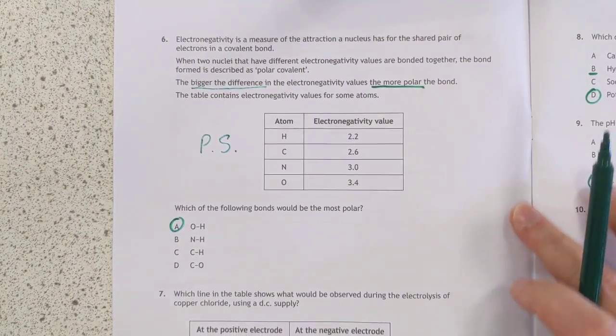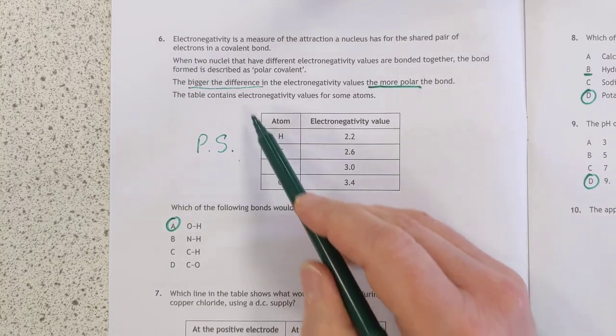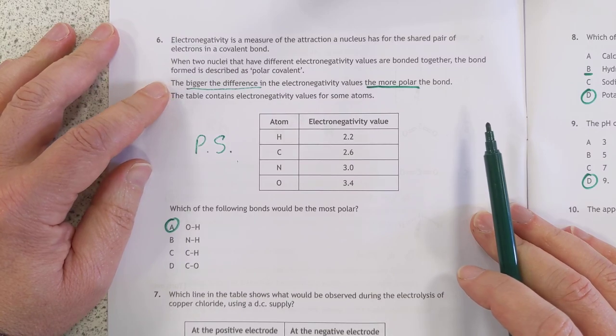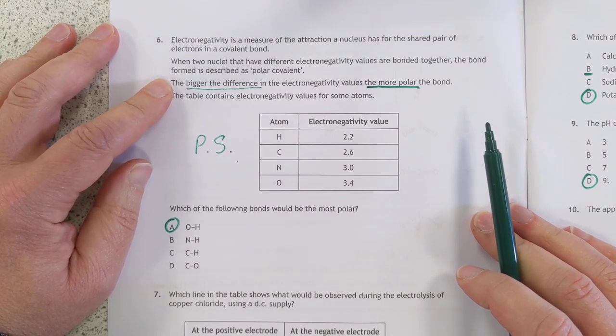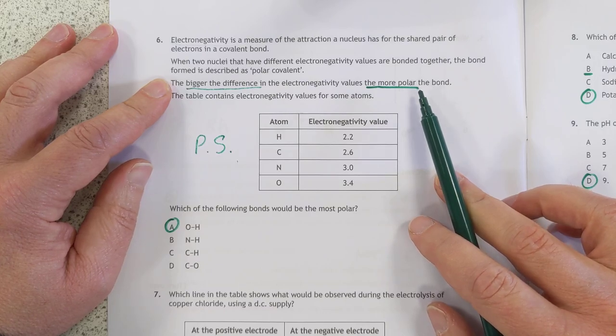Number six, electronegativity. This is problem solving. We've never come across this word here before, so you're going to have to read the question, RTFQ. And it says here, the bigger the difference between the electronegativity values, the more polar the bond is.